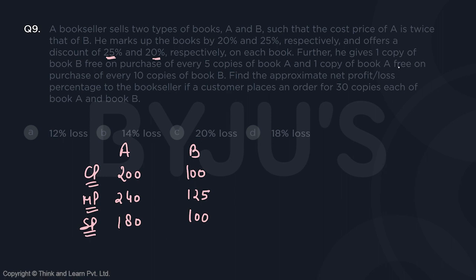He is giving one copy of B free on a purchase of every 5 copies of A, and one copy of A free on every purchase of 10 copies of B. A customer has placed an order of 30 copies of each.